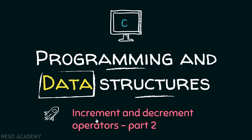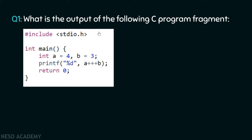In this lecture, we are going to have a discussion about the increment and decrement operators in C. This is part two of the lecture on increment and decrement operators. What is the output of the following C program fragment? In this program, I have declared a variable a assigned a value equal to four, and a variable b assigned a value equal to three. In the printf function, you can see a weird-looking expression: a plus plus plus plus b.